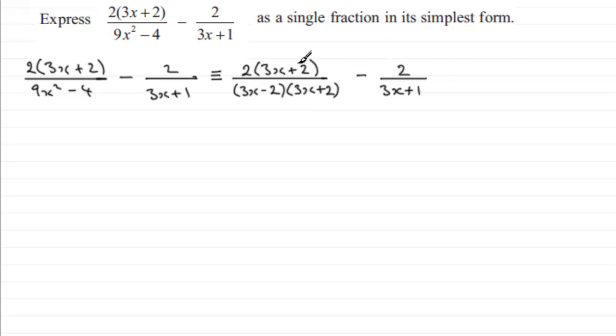Now with this fraction I can cancel some common factors. I've got the factor 3x plus 2 on the top and 3x plus 2 on the bottom there. My next step is to write underneath, identical to, and we've got the first fraction which is 2 over 3x minus 2.